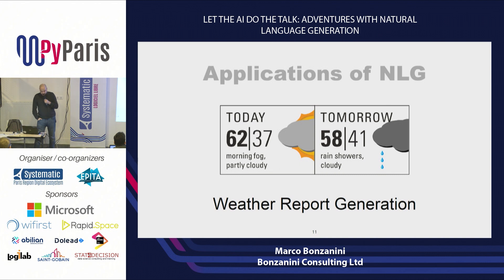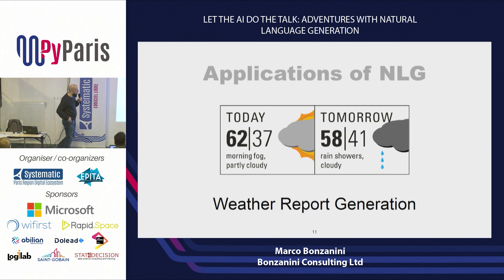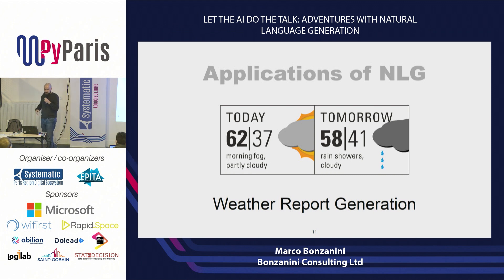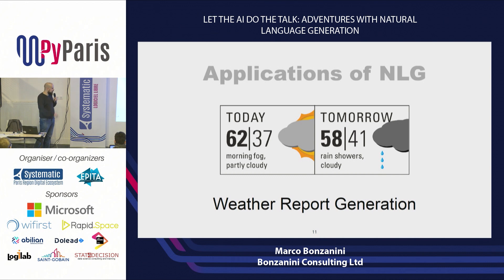Another example of application is weather report generation. Imagine you have some sort of weather forecast trying to predict the temperature, humidity, whatever. Rather than showing a dry table of numbers to the user, you can use NLG techniques to come up with a more human, user-friendly type of report. So instead of showing the table of temperature, you can say: for today we expect some warmer weather and for the rest of the week as well. The idea is that you can apply the same concept to many other verticals — rather than showing a table of numbers, show a narrative to the user, improving the user experience.